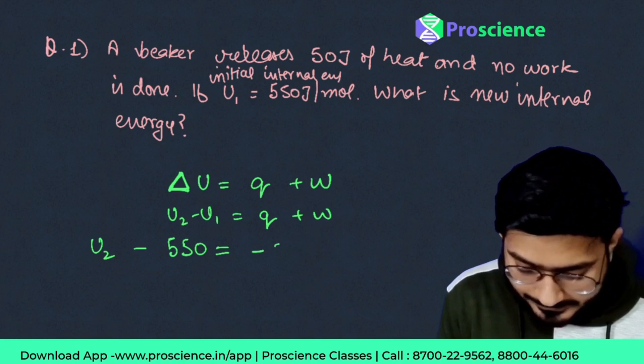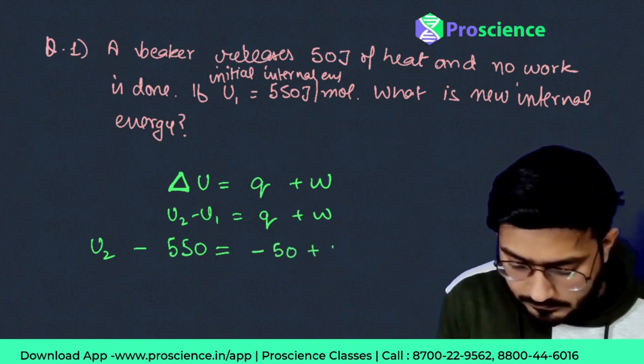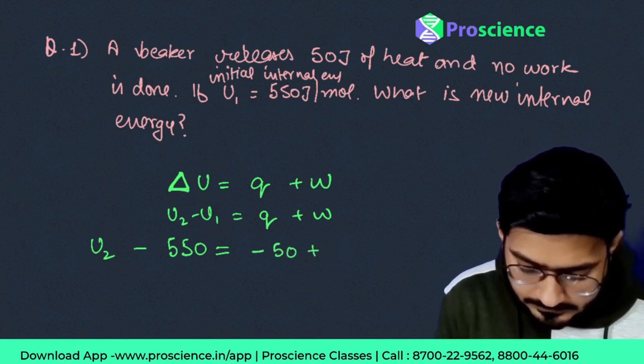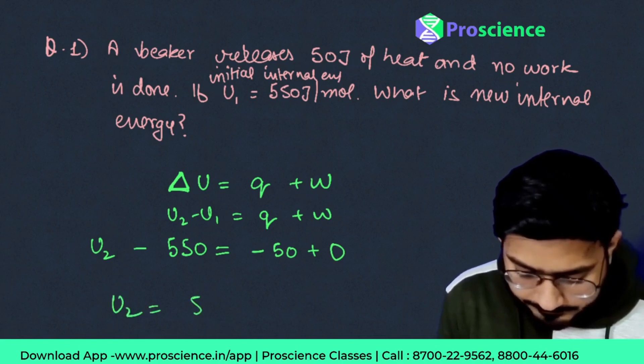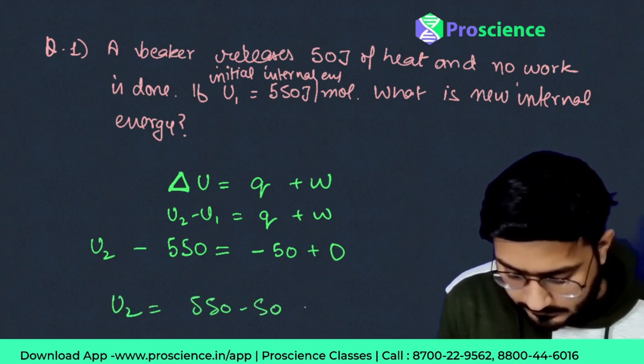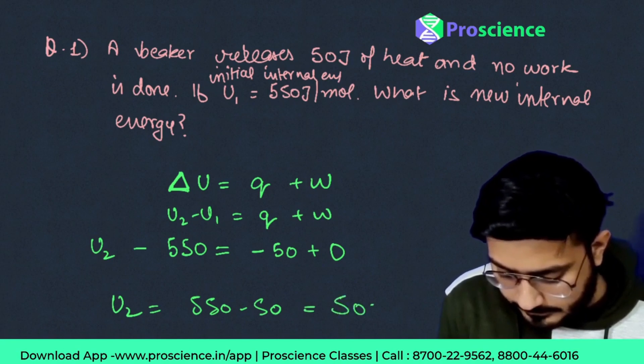So this is minus and work is given to be zero. U2 will come out to be 550 minus 50. Final U2 will be 500.